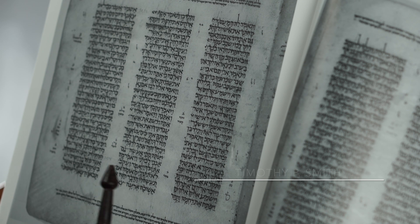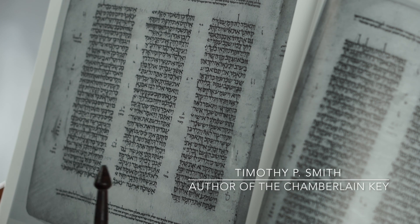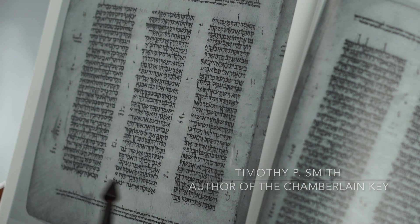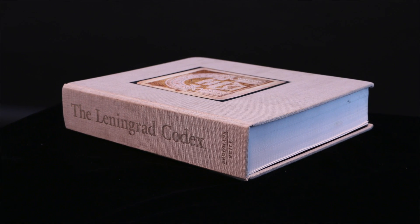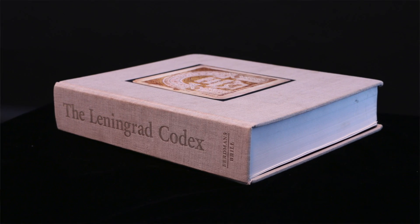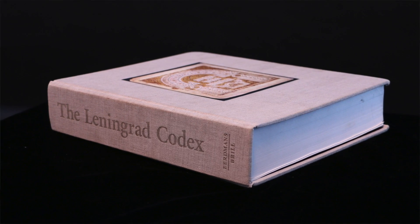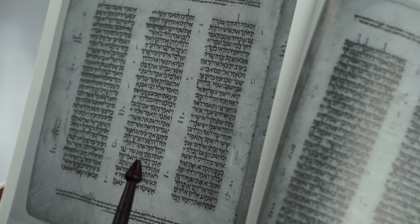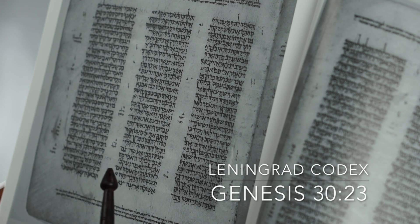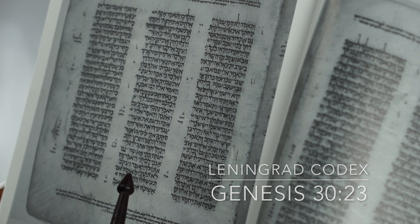What we're looking at here is the 18th page of the Leningrad Codex, which is the oldest complete manuscript of the Hebrew Old Testament. This page corresponds — the 18th page corresponds — with the 30th chapter of Genesis, beginning in verse 23.